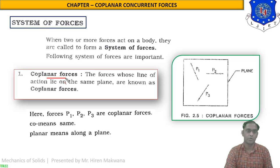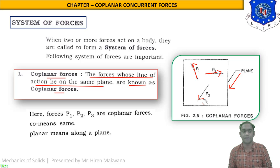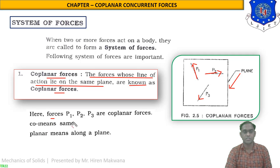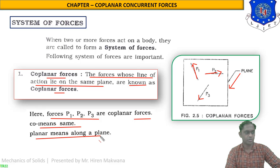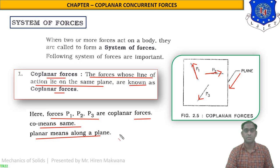The first system of forces is co-planar forces. The forces whose lines of action lie on the same plane are known as co-planar forces. In the figure, forces P1, P2, and P3 all lie in a single plane, so their lines of action are in the same plane. 'Co' means same and 'planar' means along the plane.